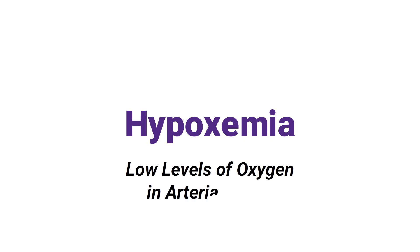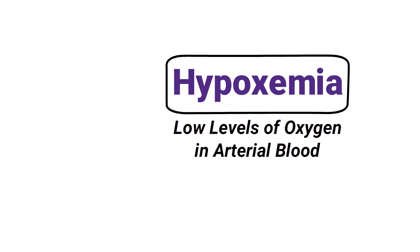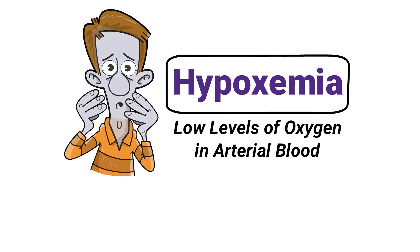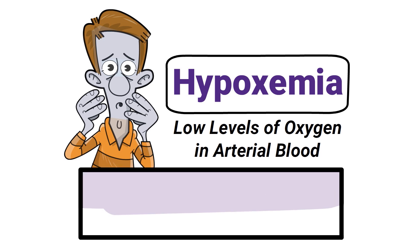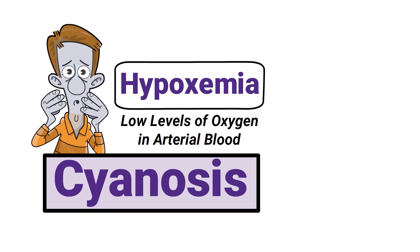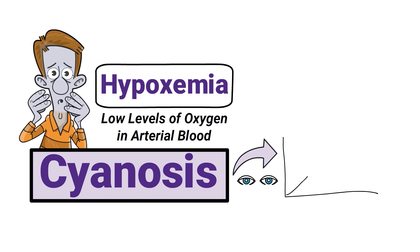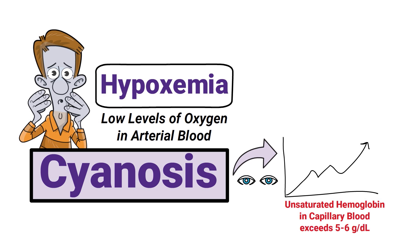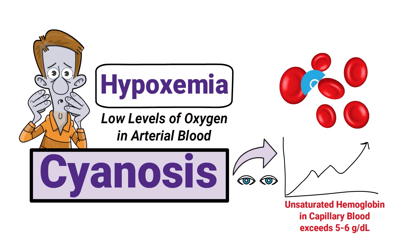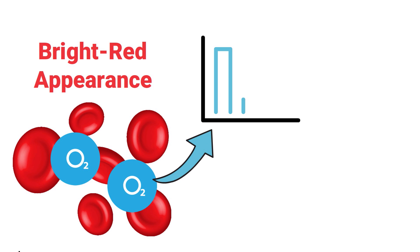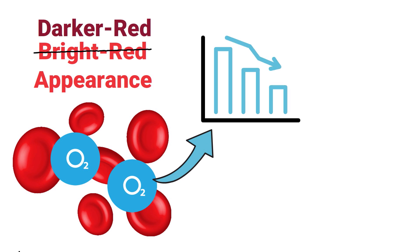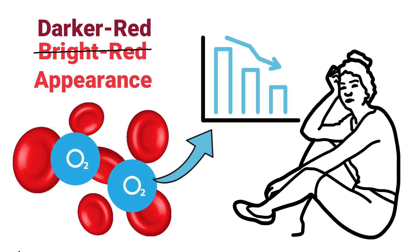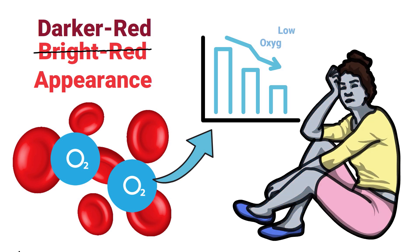Hypoxemia is a term that refers to low levels of oxygen in arterial blood. Whenever this is the case, the patient may develop a bluish discoloration on their skin, known as cyanosis. This abnormality typically becomes visible when the amount of unsaturated hemoglobin in capillary blood exceeds five to six grams per deciliter. Blood carrying oxygen has a bright red appearance; if oxygen levels are low, the blood has a darker red color, which explains the bluish skin discoloration.